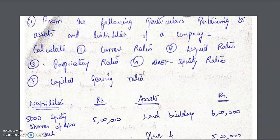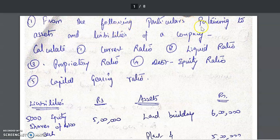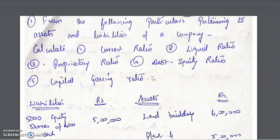Let us go through some of the sums related to ratios in this video. For your reference, there is one sum given here: from the following particulars pertaining to assets and liabilities of the company, you are to calculate current ratio, liquid ratio, proprietary ratio, debt equity ratio, and capital gearing ratio.